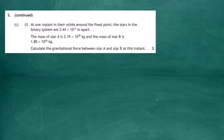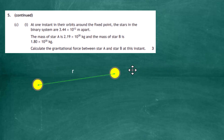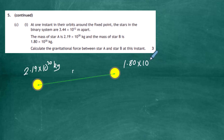Question 5 continued, part c(i). At one instant in their orbits around the fixed point, the stars in the binary system are 3.44 × 10¹² meters apart. The mass of star A is 2.19 × 10³⁰ kg and the mass of star B is 1.80 × 10³⁰ kg. For three marks we calculate the gravitational force between star A and star B. We label these m₁ and m₂ with r as the distance between their centres.